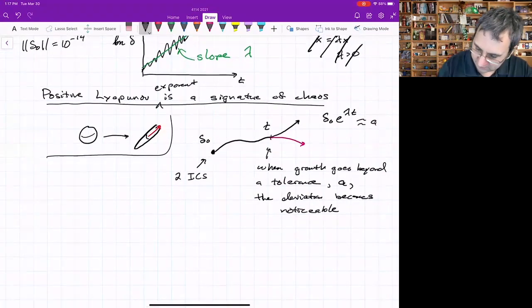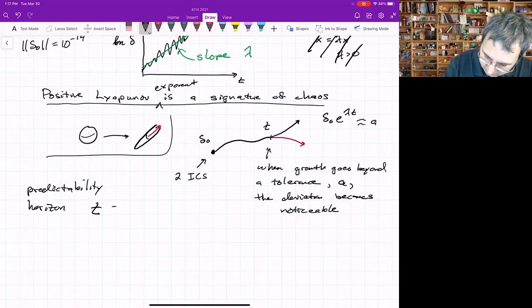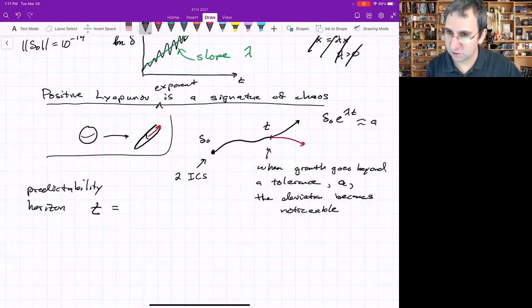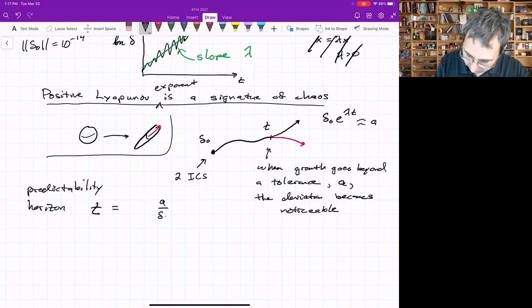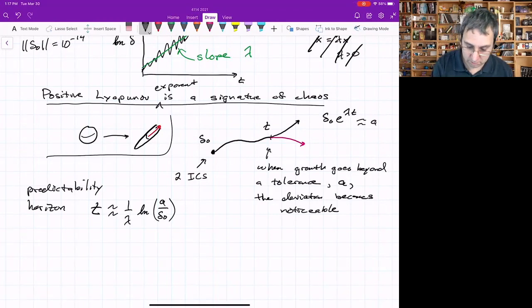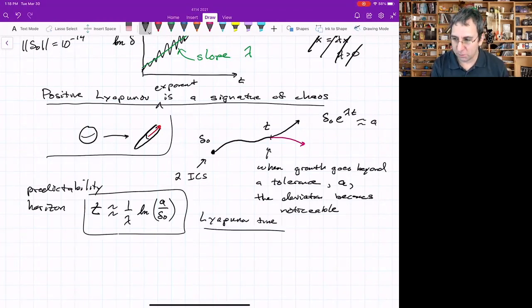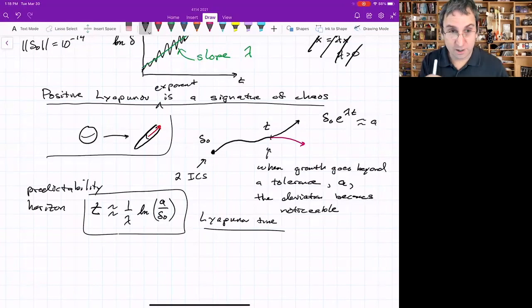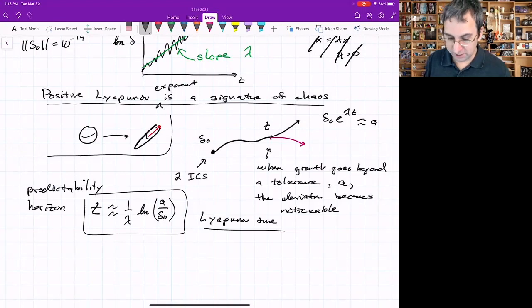So just from this formula, just rewrite it. That's the predictability horizon, T, and just get it from this. Just take the natural log, move the delta naught over. So we've got A over delta naught, natural log of that divided by one over lambda. And this is just approximate. This is sometimes called the Lyapunov time. And it's the time beyond which you can't reliably predict. It's due to this Lyapunov exponent, but it's also due to your delta naught related to A. And that's what kills you in terms of trying to increase predictability.